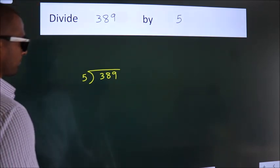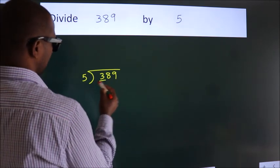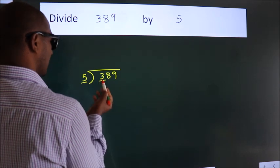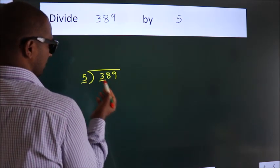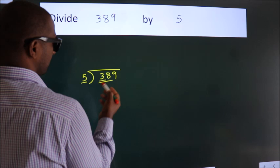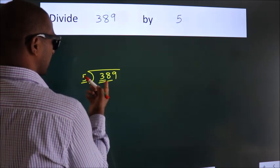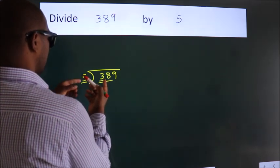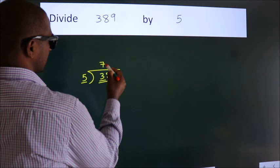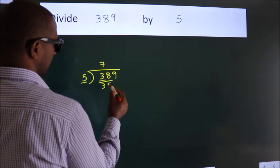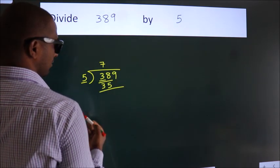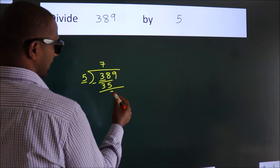Next, here we have 3, here 5. 3 is smaller than 5, so we should take 2 numbers: 38. A number close to 38 in the 5 table is 5 sevens, 35. Now we should subtract. We get 3.